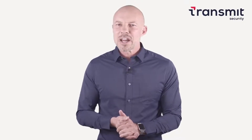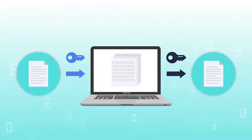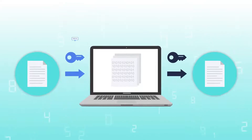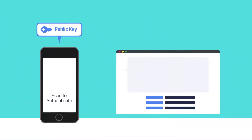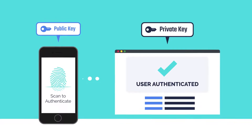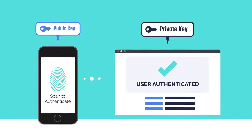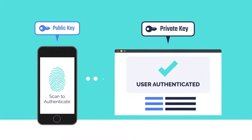A website can decide to register a user for WebAuthN on a specific device. During the registration process, the device generates a public and a private key. The private key is kept on the device, and the public key is delivered to the website, which stores it alongside the user's identifier.